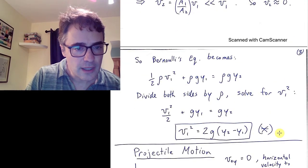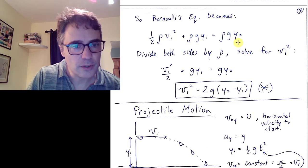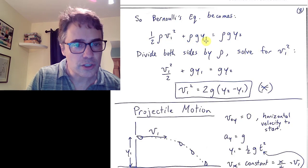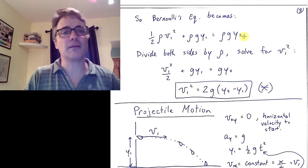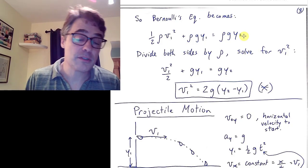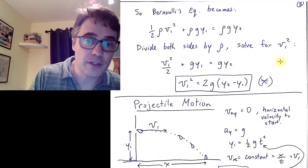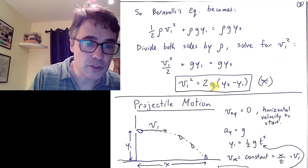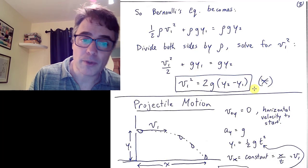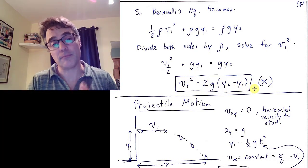Bernoulli's equation then becomes, with the P's subtracted from both sides and V2 removed, 1 half rho V1 squared plus rho GY1 equals rho G times Y2. There's the density of water in all terms. We can divide both sides by rho. Now I want to solve for V1 squared: 2 times G times Y2 minus Y1. So the greater the height, the faster the water comes out, which makes sense.